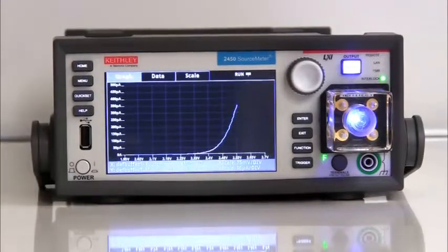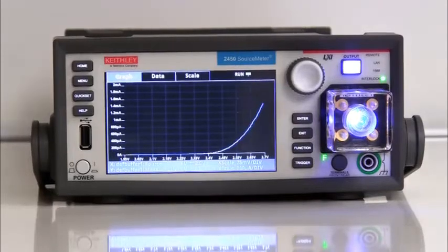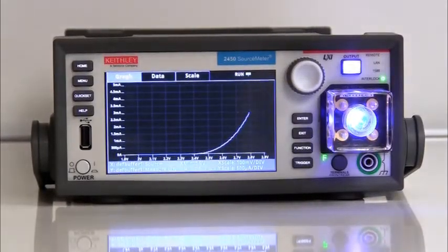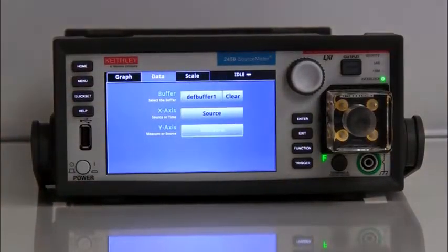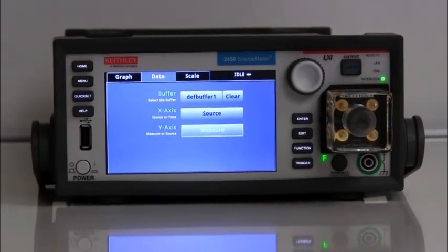The graph view gives the user full flexibility to display specific data buffers and what data is used on the X and Y axis. The X-axis can display source or time data versus source or measure data on the Y-axis.